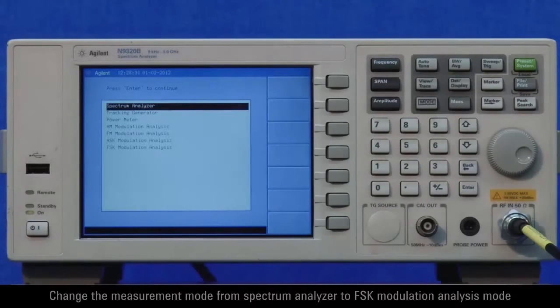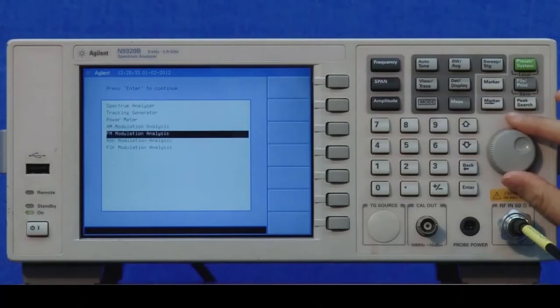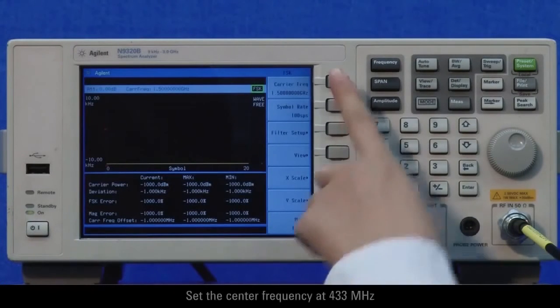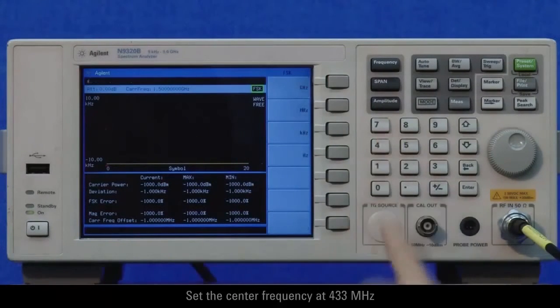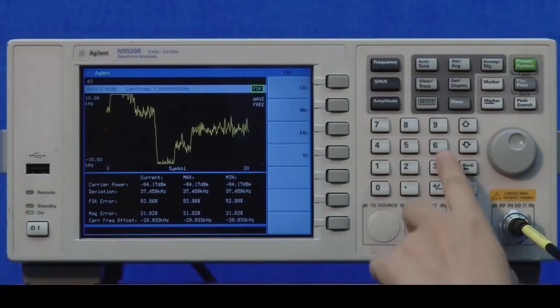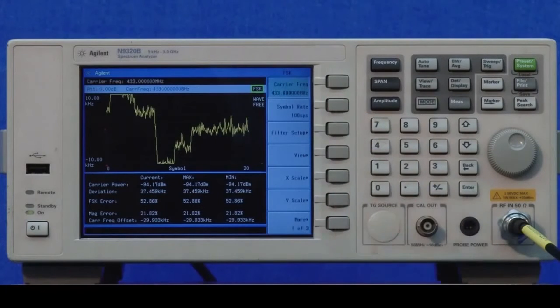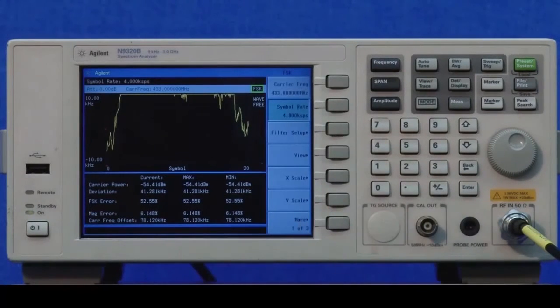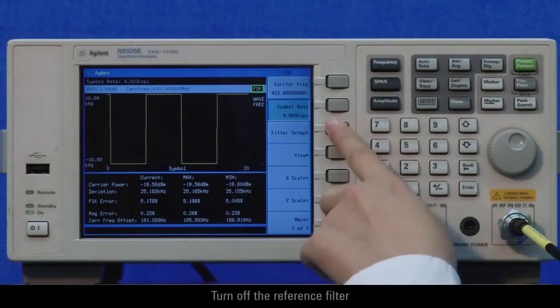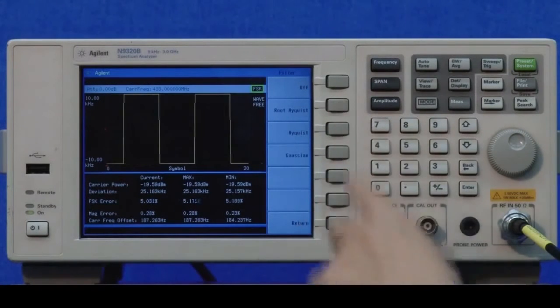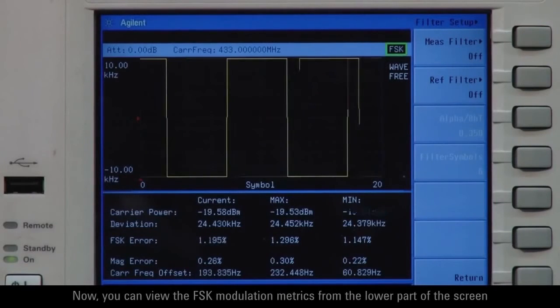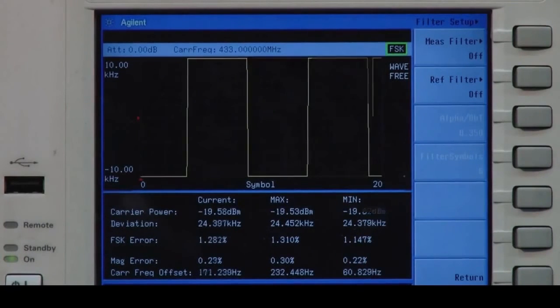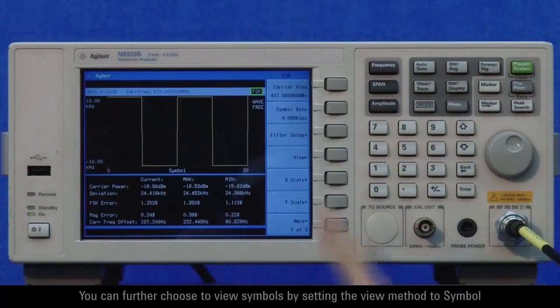Change the measurement mode from spectrum analyzer to FSK modulation analysis mode. Set the center frequency at 433 megahertz. Set the symbol rate at 4K SPS. Turn off the reference filter. Now you can view the FSK modulation metrics from the lower part of the screen. You can further choose to view symbols by setting the view method to symbol.